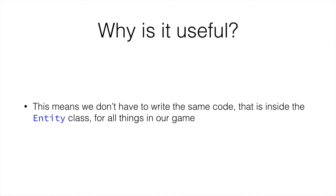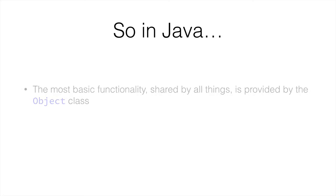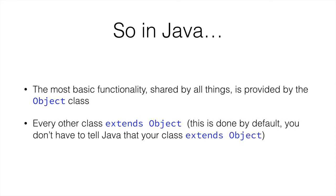In the end, you end up with really small classes that, however, make up the majority of your program. So in Java, the most basic functionality shared by all classes is provided by the class Object, which is a very generic class. Every other class you make extends Object by default — you don't have to tell Java that your class extends Object, but it does, because Object provides some basic functionality.